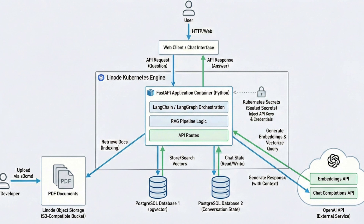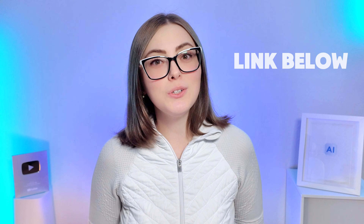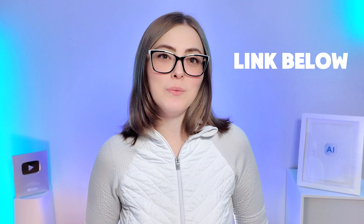We're building a RAG chatbot with evidence-based capabilities. We're going to ingest messy airline policy PDFs, vectorize them, and let an LLM answer questions like, am I entitled to a hotel if ATC caused the delay — with actual citations. We are deploying this completely via code on a managed Kubernetes service on Akamai Cloud using Terraform for infrastructure and just regular old Postgres for our vector storage. If you want to jump straight into the code, the repository link is in the description below. Let's build it.